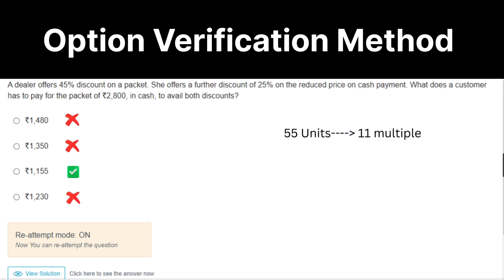Next question: a dealer offers 45% discount, which means 55 units. So the option should be a multiple of 11. You can directly check the 11 multiple in option 3.